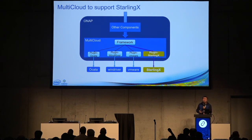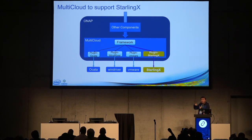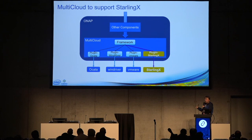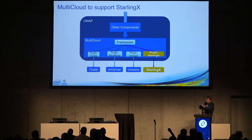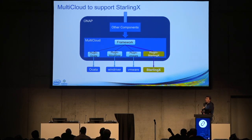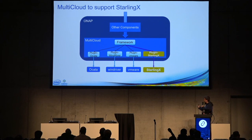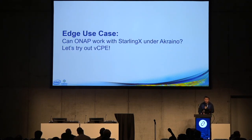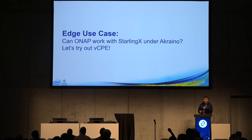We also did some modification in the multi-cloud component. Multi-cloud is a layer that can call different versions of OpenStack, Wind River distributions, VMware, AWS, or Microsoft Azure — it's a layer on top of various IaaS solutions. We added a plugin inside the multi-cloud framework to have multi-cloud support StarlingX. The use case question was: can ONAP work with StarlingX on the Acrino framework to launch virtual functions for the edge? We tried that out with virtual CPE.